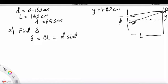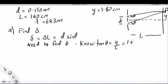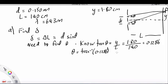So, we need to find theta. Now, we know that tan theta equals Y over L, which is 1.8 centimeters over 140 centimeters, which is 0.1286. So, we get theta is tan to the minus 1 of that, and that gives us 0.737 degrees.